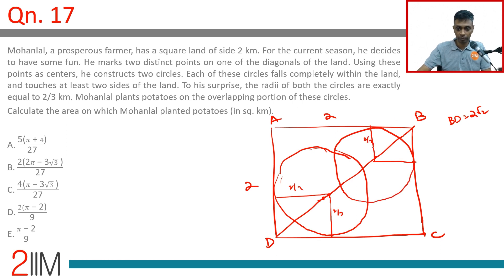This is 2/3. This is 2/3. Let's say this circle has a center of P. This circle has a center of Q. Lovely. We want to find—what does he do? He plants potatoes on the overlapping area. That is this area, this region. He plants potatoes.